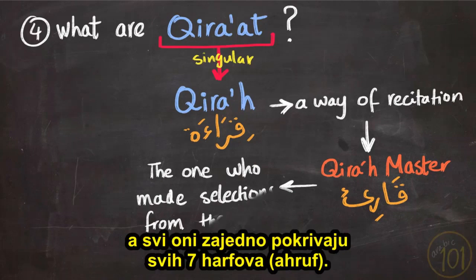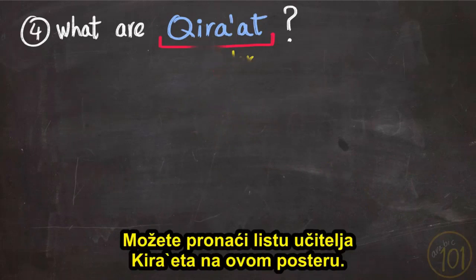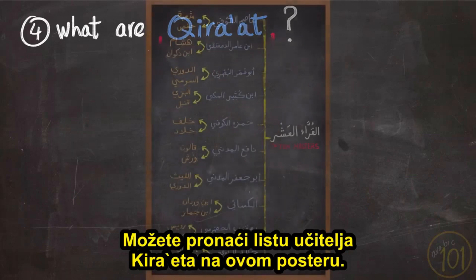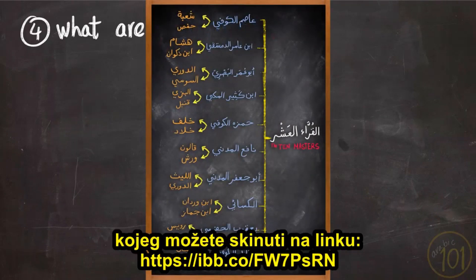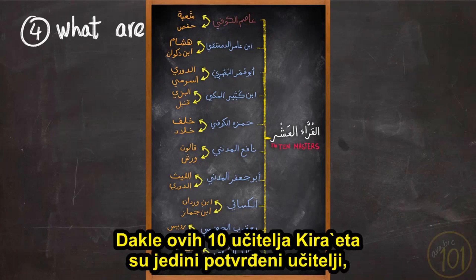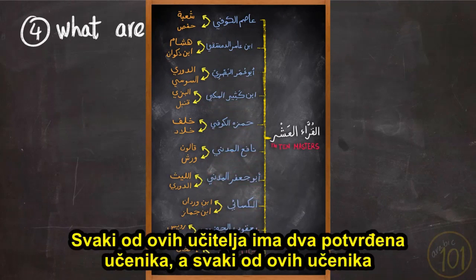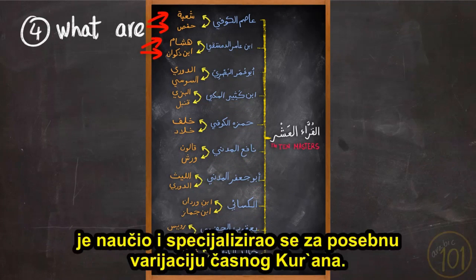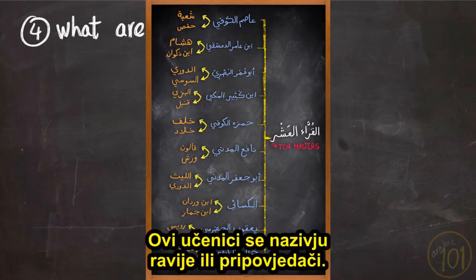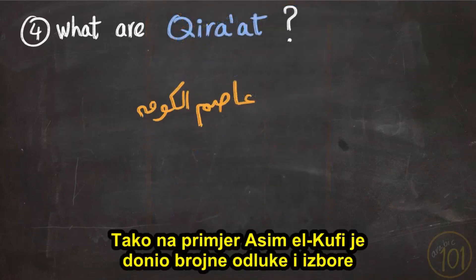There are 10 confirmed masters of qiraat, and all of them combined cover all the seven ahroof. You can find the list of the masters of the qiraat in a poster downloadable from the description of this video. These 10 masters are the only confirmed masters directly linked to the Prophet, peace be upon him. Each one of these masters has two confirmed students, and each student has learned and specialized in a distinct variation of the Holy Quran. These students are called rawi, or narrator.